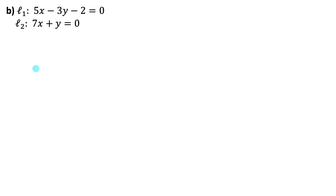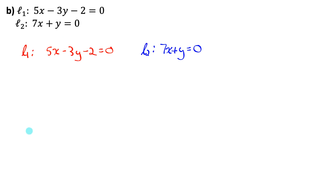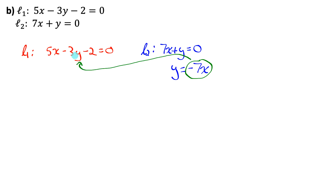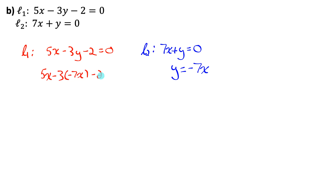Let's try another one. I'll set up the equations beside each other. I need to isolate a variable — I look for a coefficient of one. The y in the second equation has a coefficient of one, so I'll isolate that: move the 7x to the other side to get y equals negative 7x. Now I substitute negative 7x in for y in the other equation.